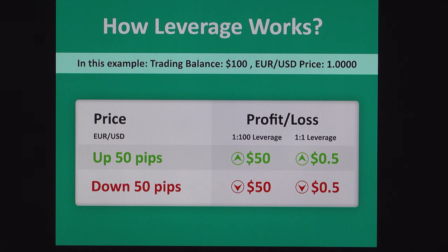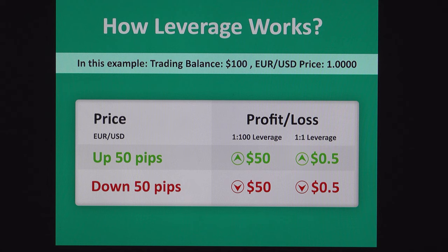We will understand what differences we get when choosing a leverage and how it can be useful. Here we have a very clear example of how leverage works. With a trading balance of $100 on EUR/USD at 1.0, for a 50-pip movement: with 1:200 leverage, profit and loss will be $50, but with 1:1 leverage it will be only $0.50.